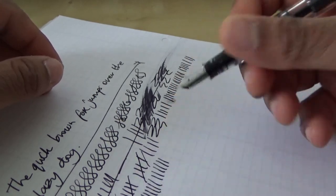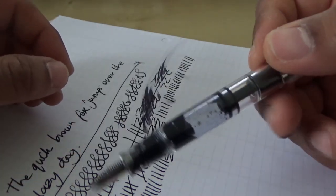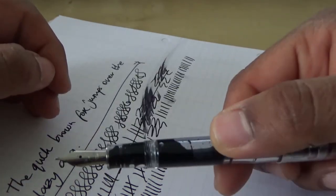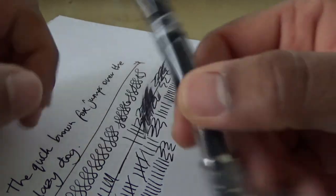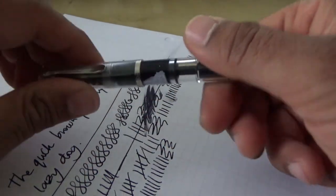can get that doesn't have a gold nib. In terms of quality, this is well up there. The other good thing with the M205 or the M200 series with Pelican is that it is the same specification as